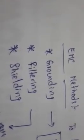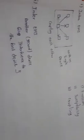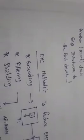So those are the methods of EMC. These methods — grounding, filtering, and shielding — are used to reduce the EMI, that is electromagnetic interference, and to ensure electromagnetic compatibility. Thank you.